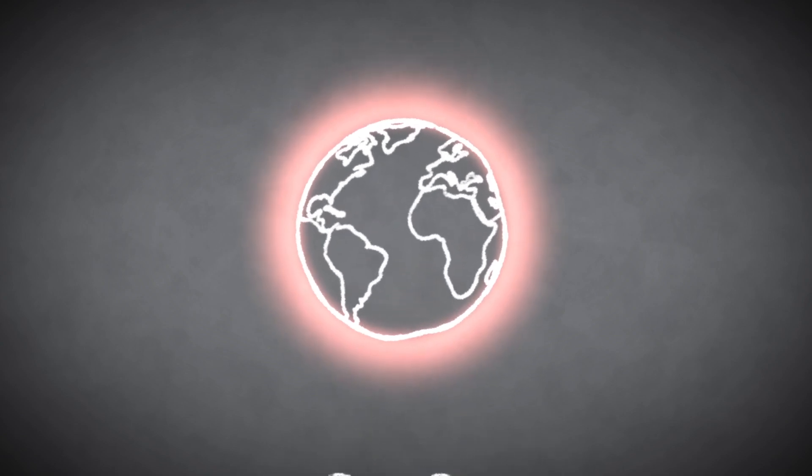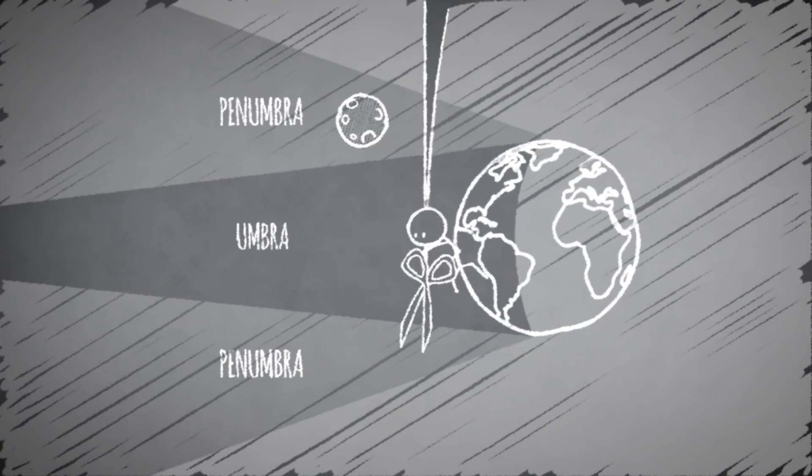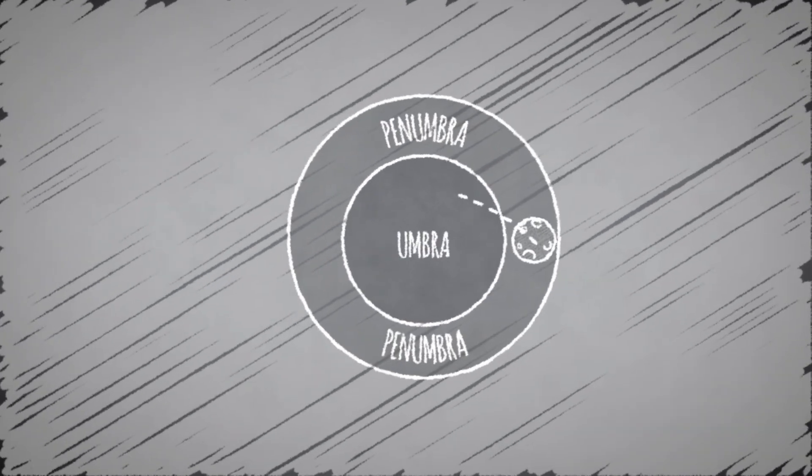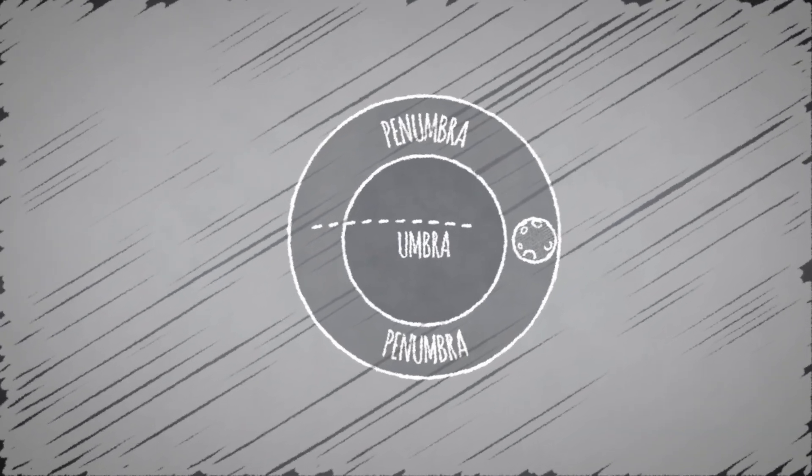During totality, the moon's light is dimmed considerably, allowing you to see other objects in the sky that perhaps just an hour earlier were being washed from view by its bright glow, depending on the angle that the moon takes through Earth's shadow.